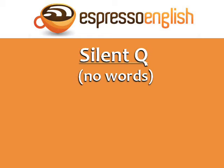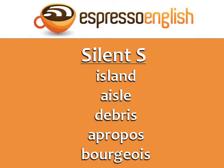Silent Q: No words. Silent R: No words in American English. British English has some words with silent R. Silent S: Island. Isle. Debris. Apropos. Bourgeois.